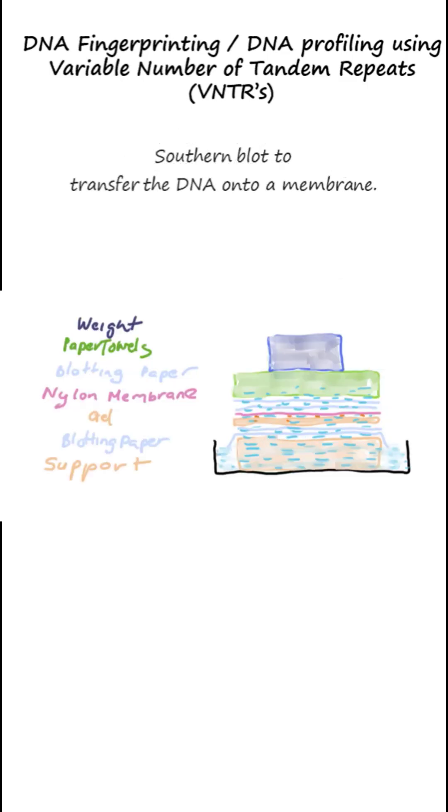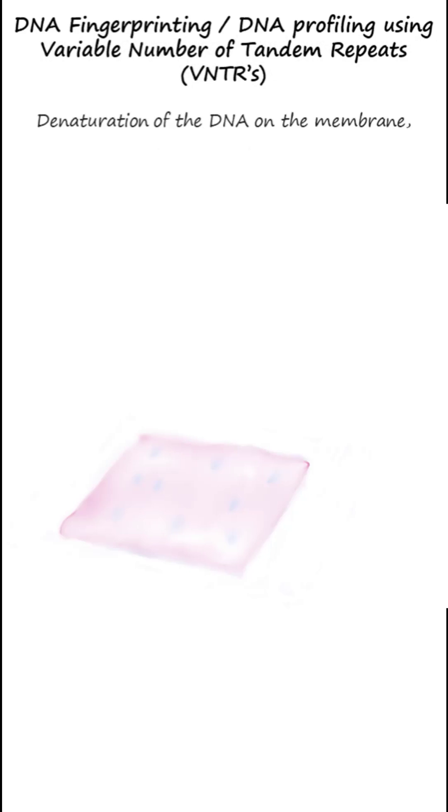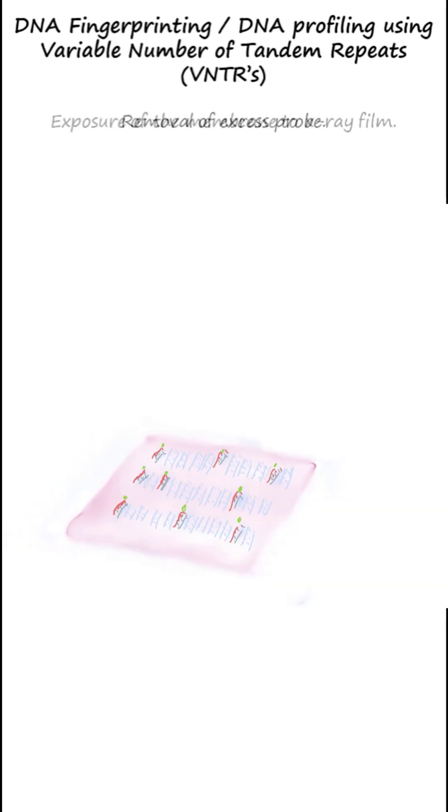Southern blot transfers the DNA onto a membrane. The DNA on the membrane is denatured and hybridized with radioactive probes. Excess probes are removed, and the membrane is exposed to X-ray film.